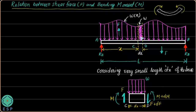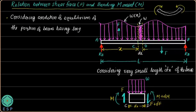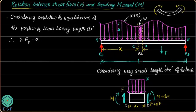Since C and D are very close, these two points represent essentially a single point on the beam. I will now take this small portion of beam and apply the condition of static equilibrium. Considering the equilibrium of the portion of the beam having length dx, I am going to apply the equilibrium of forces — summation of forces in the vertical direction equals zero.